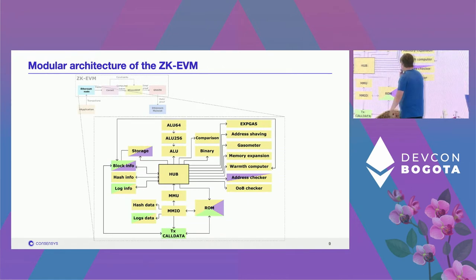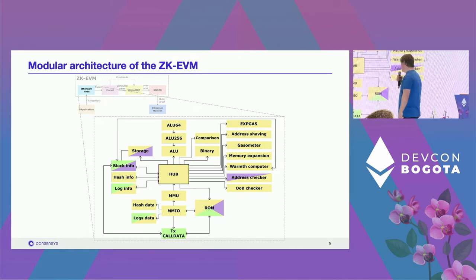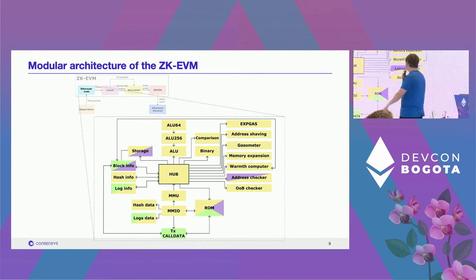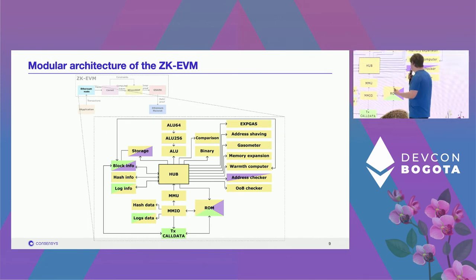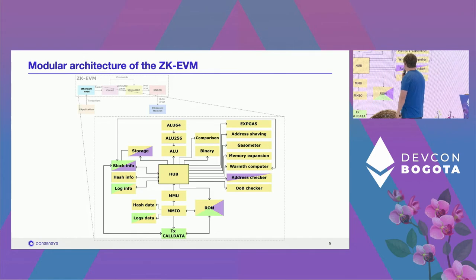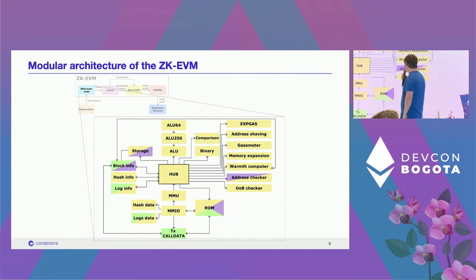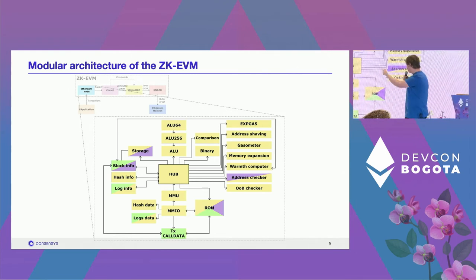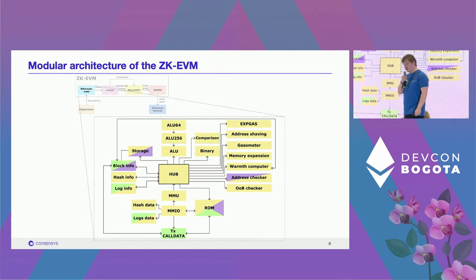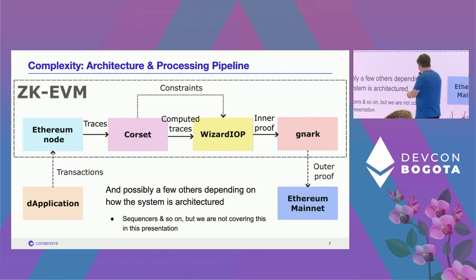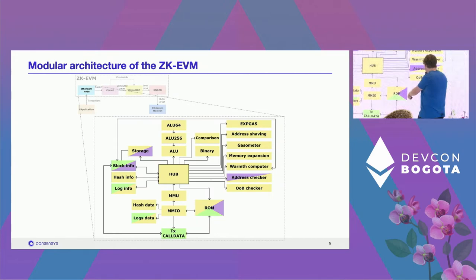Since the EVM is a beast of complexity, it pays off to decouple as many components as possible and work in a modular fashion, concentrating the complexity in different places. The general architecture has the central piece, which we call the hub — our stack and call stack — and plenty of smaller modules tasked with specific operations such as arithmetic, binary operations, storage, and memory.